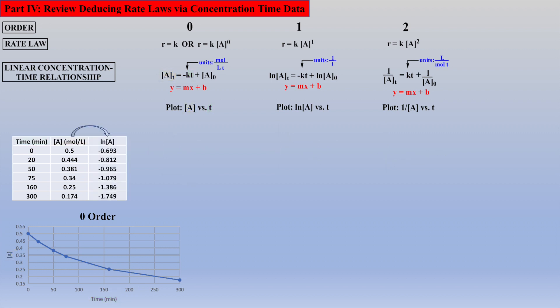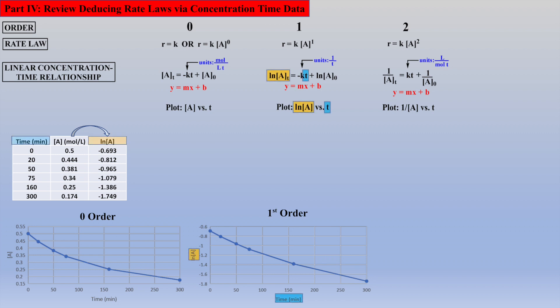Next, let's convert the concentration of A data to natural log of the concentration of A, and see if natural log of the concentration of A versus time yields a straight line plot. This plot also proves that the reaction does not follow first-order kinetics, because the plot is not linear.